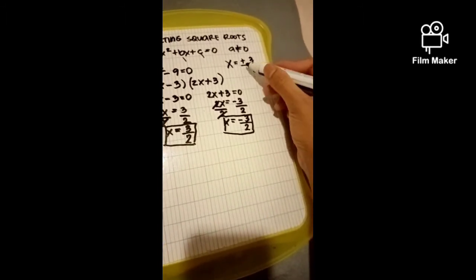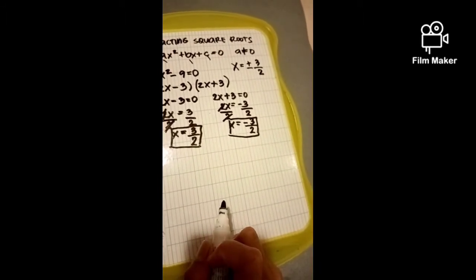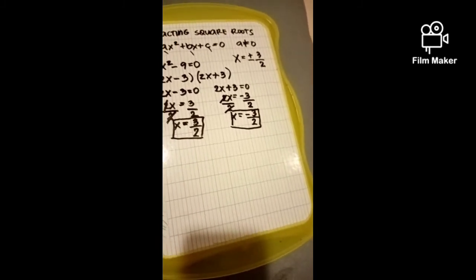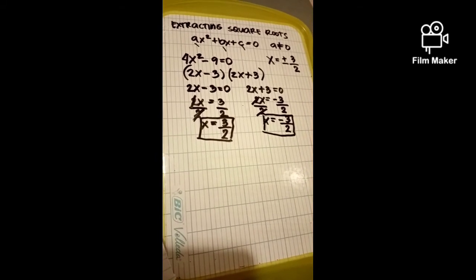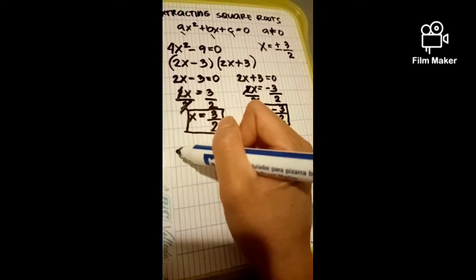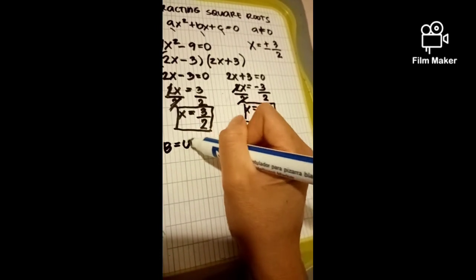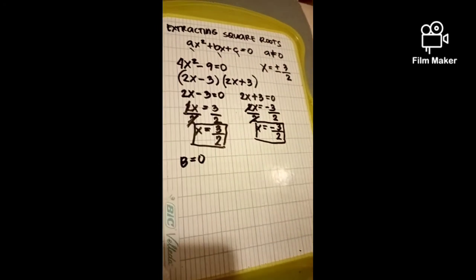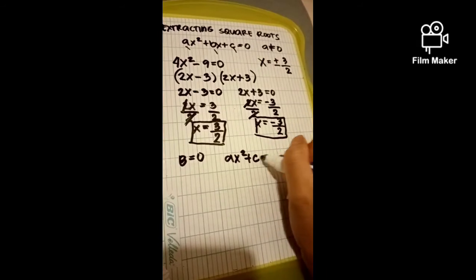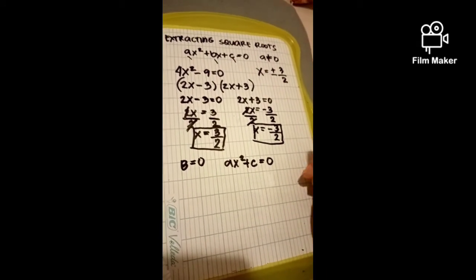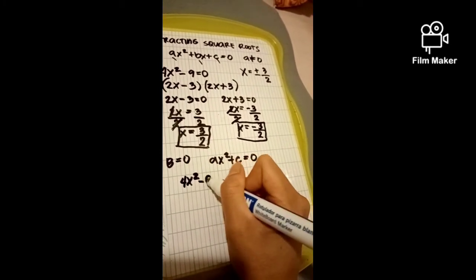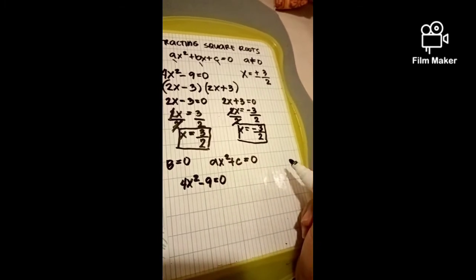We use the positive-negative sign to write the two solutions in a more compact form: x equals plus or minus 3 over 2. Now, I will give you an alternative method that can be used easily to solve equations where b is equal to 0, giving the form ax squared plus c equal 0. The equation 4x squared minus 9 equals 0 is in this form.